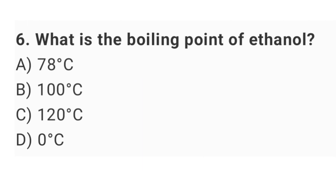Question number six: what is the boiling point of ethanol? The right answer is option A: 78 degrees Celsius.